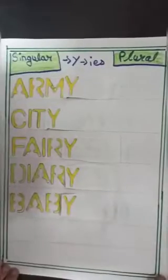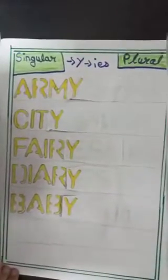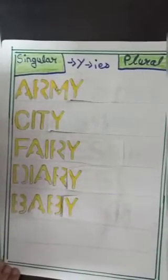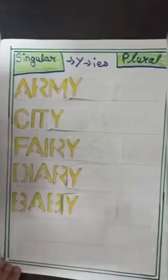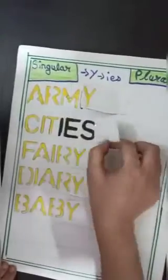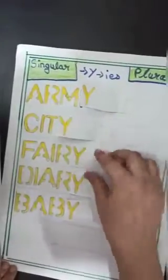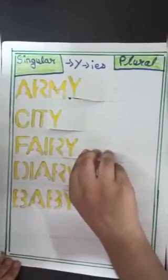Rule number 5: For nouns, replacing Y with IES. Singular, plural. Army, armies. City, cities. Fairy, fairies. Dairy, dairies. Baby, babies.